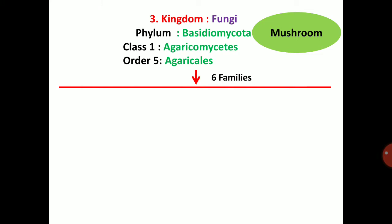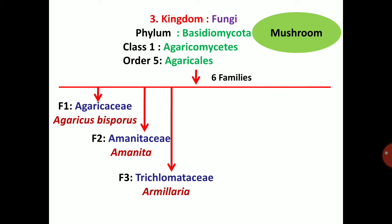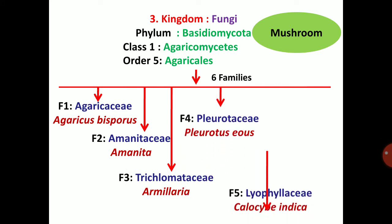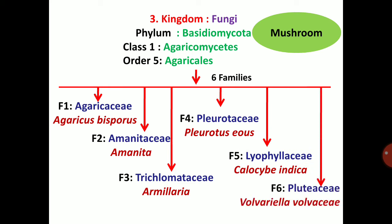Mushroom comes under the kingdom Fungi, phylum Basidiomycota, class Agaricomycetes, order Agaricales. There are six important families: first is Agaricaceae, which contains Agaricus bisporus; second is Amanitaceae — Amanita; third is Tricholomataceae — Armillaria; fourth is Pleurotaceae — Pleurotus eos; fifth is Lyophilaceae — Galerina indica; sixth is Plutaceae — Volvariella.